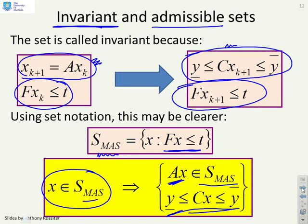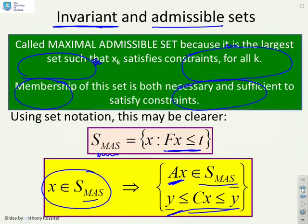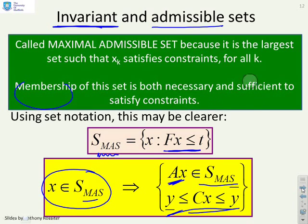And that's the sort of invariance conditions we're looking at. Strictly speaking, MAS means it's the biggest possible set I can find such that this is true. Whereas invariance simply says it's any set for which this is true. So maximal admissible set is the terminology used when it's the largest that we can find. And membership of this set is both necessary and sufficient to satisfy constraints.